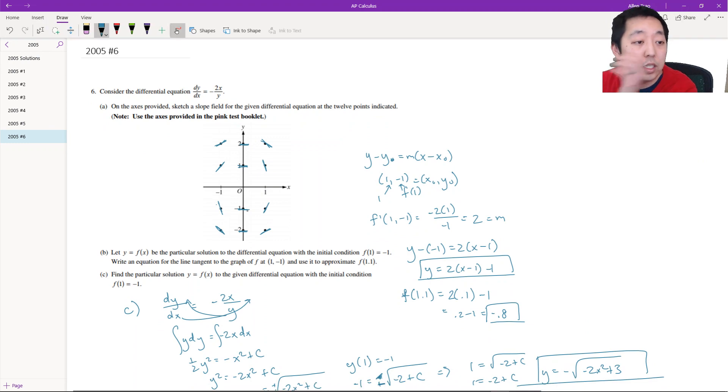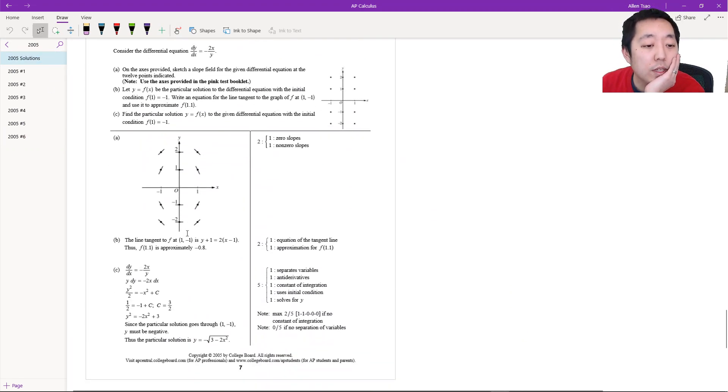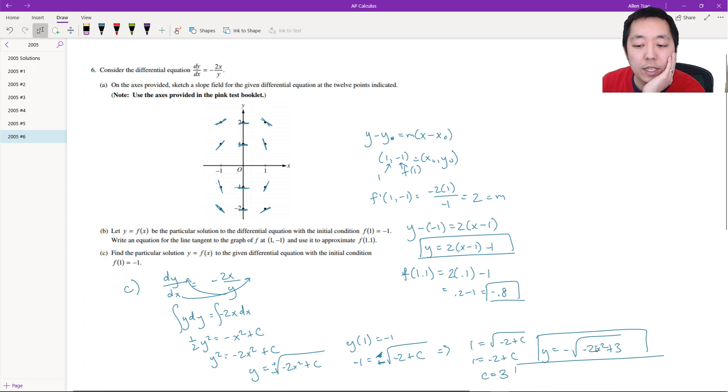So let's take a look at the solutions and compare that to what we got. That looks pretty good. Negative 0.8 and negative 3 minus 2x squared. Yeah they just swapped the 3 and the 2x squared. But that's the same thing. So hope you found it helpful. I'll see you in the next video.